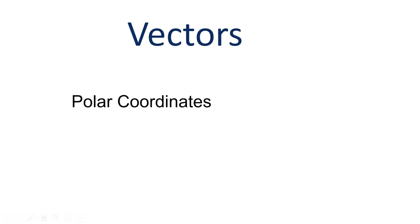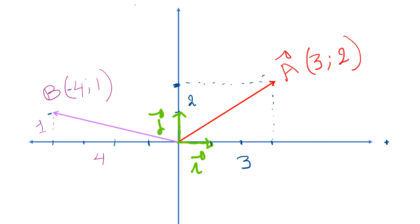We are going to talk about polar coordinates of a vector. To find the polar coordinate using the Cartesian coordinate, it's very simple. First, you need to find the magnitude of vector A — we call it resultant vector R — and then you find the direction of your vector A.